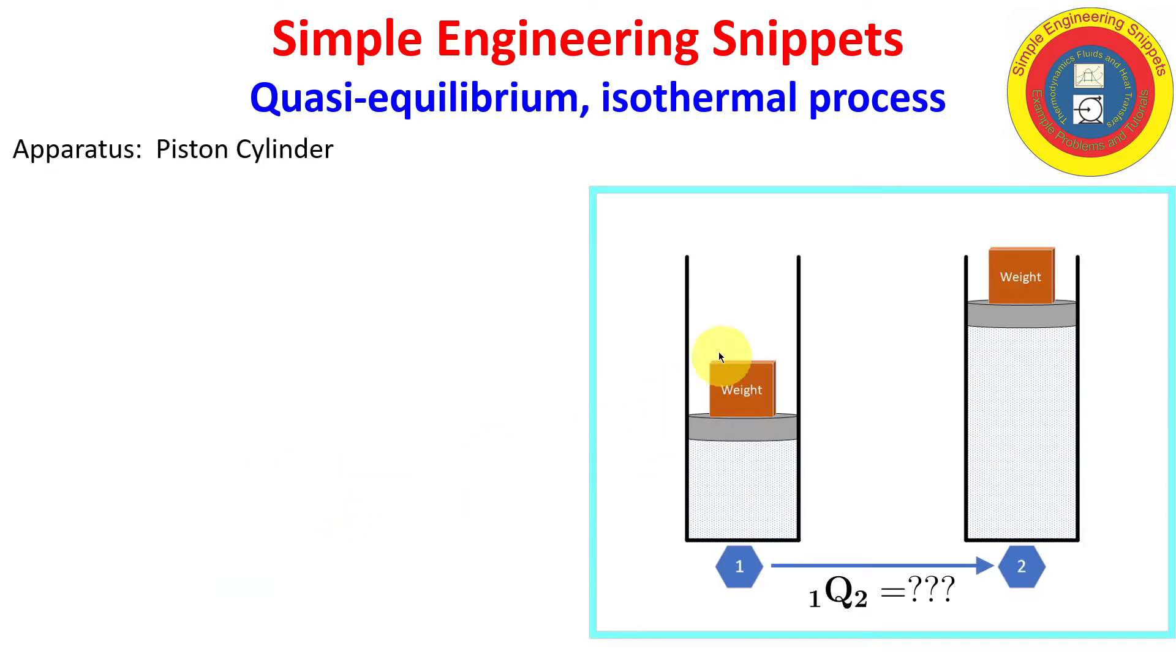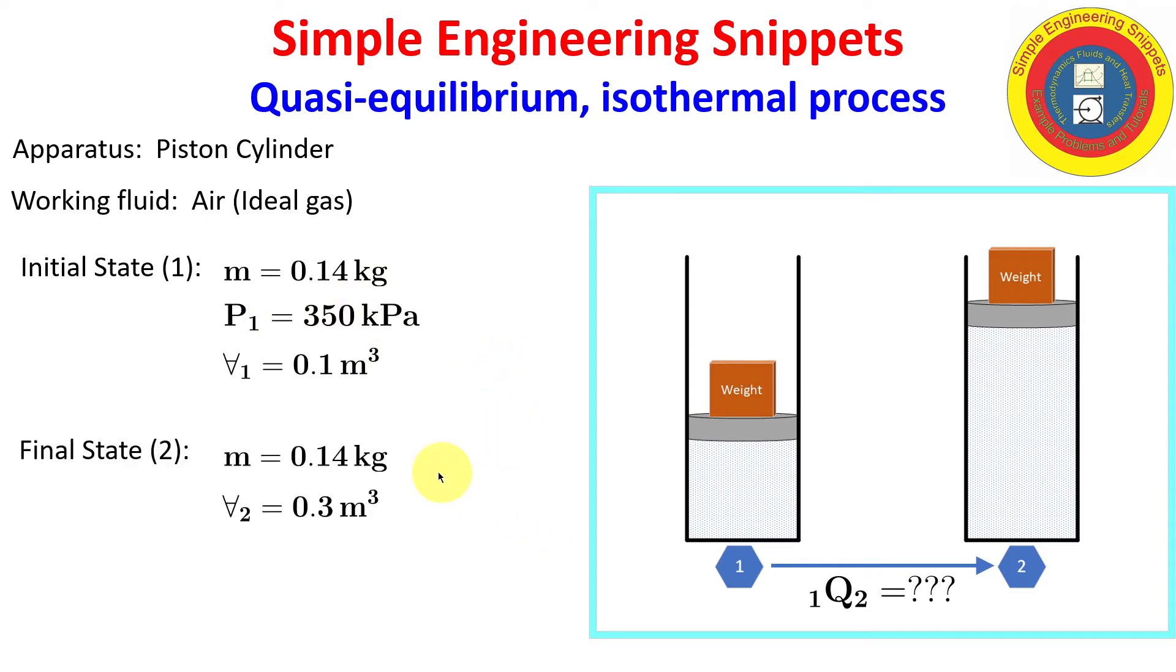Okay, again, we have a piston-cylinder apparatus. The working fluid is air, and we're going to be treating it as an ideal gas. The conditions at state 1 are provided. We know the mass, we know the pressure, we know the volume. And at state 2, it's the same mass because it's just a fixed mass system, and we know the volume at 2. We want to find the heat addition from state 1 to state 2.